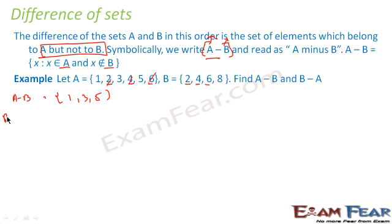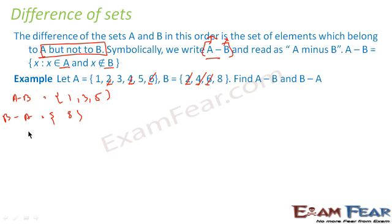Similarly for B minus A, we subtract the elements common to A from B. The common elements are 2, 4, 6. We subtract these, and what we get is 8. We see that A minus B is not equal to B minus A.